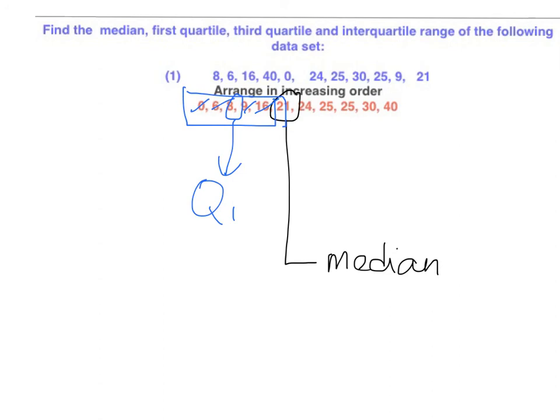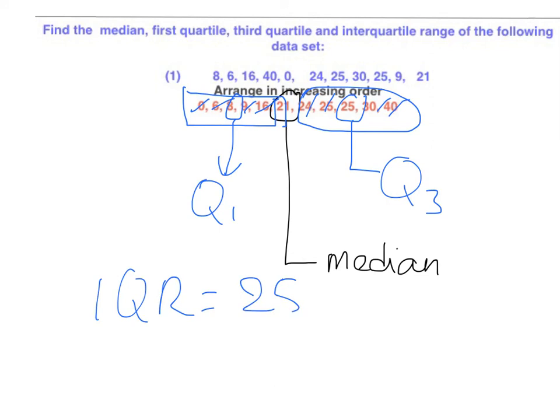Similarly, for the third quartile, we consider this set of data. 25 is the middle of this distribution, and this is the third quartile. Below 25, there are 75% of the data. So the interquartile range in this case is 25 minus 8, which is 17.